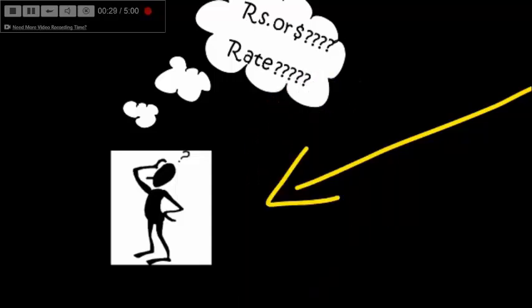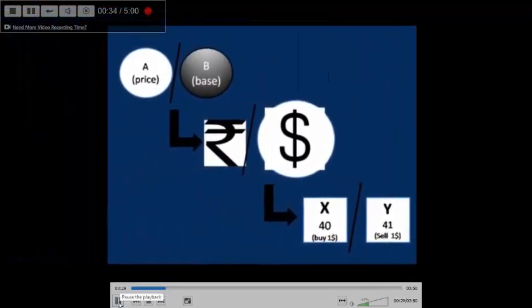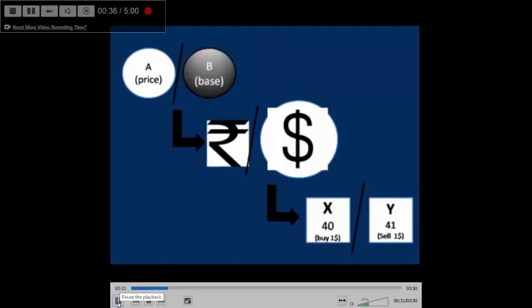There was a confusing state for him. In our earlier videos we discussed this form A by B, where A is the price currency and B is the base currency.